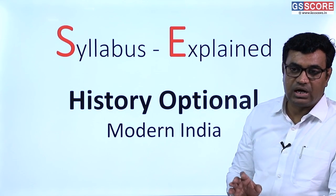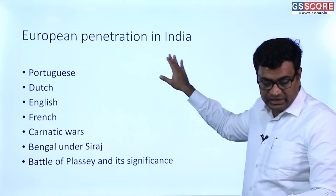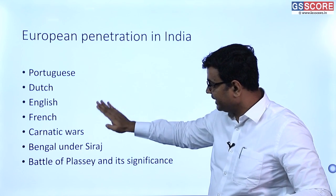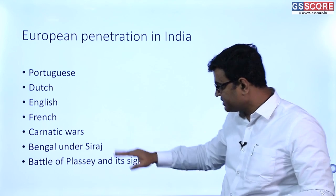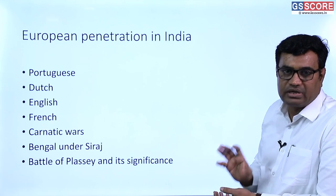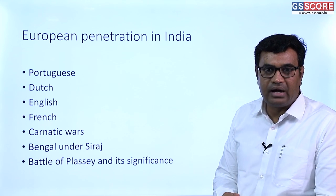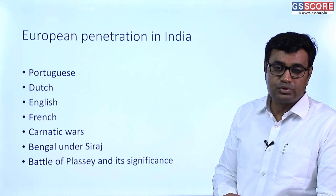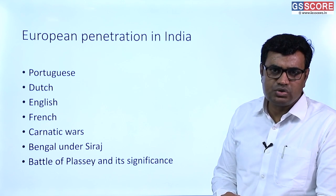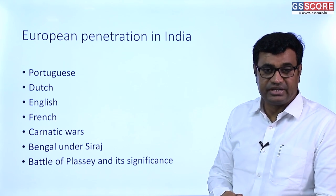The first topic mentioned under Modern Indian history is European penetration in India, covering the Portuguese, the Dutch, the English, and the Carnatic Wars. The first European power to arrive in India were the Portuguese. Vasco da Gama discovered the sea route to India; he came to India in 1498, by the end of the 15th century. Portuguese traders then began to dominate the western coast of India.